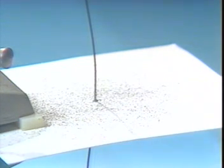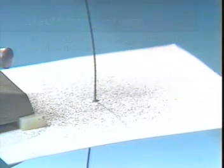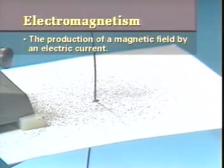If the wire is straight, the magnetic field is extremely weak. If the wire is coiled, the magnetic field is concentrated and can be very strong. This, of course, is electromagnetism, the production of a magnetic field by an electric current.